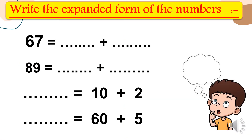Write the expanded form of the numbers. First number: sixty-seven. Seven in ones — value equals seven. Six in tens — put a zero — value equals sixty. Next: eighty-nine. Nine in ones — value equals nine. Eight in tens — value equals eighty.